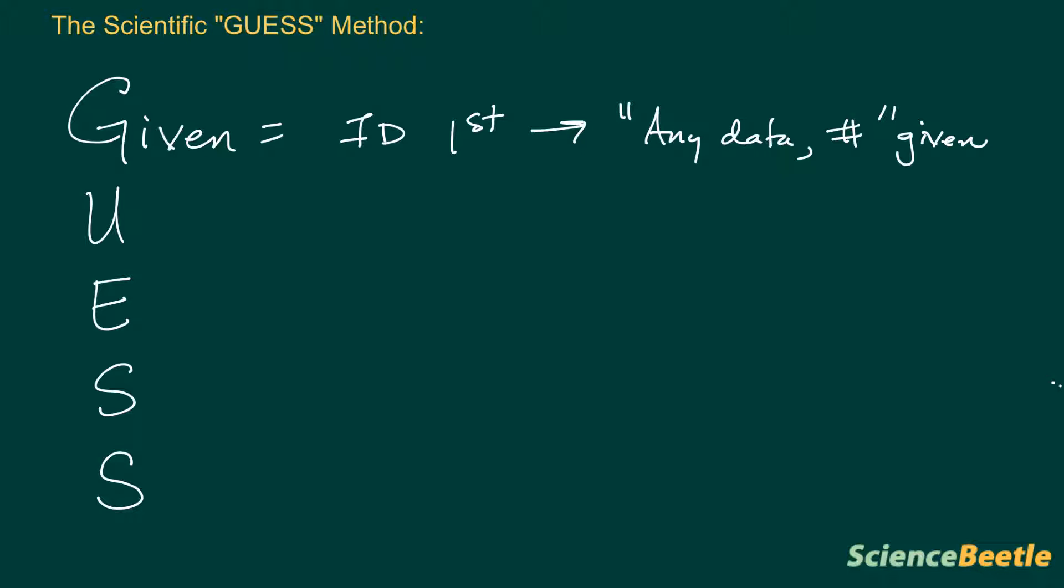The next thing you want to do is identify the unknown. The unknown in this process is going to be any variable that you're trying to find. Make sure that you identify the actual units for this because the final answer has to have the correct number of units.